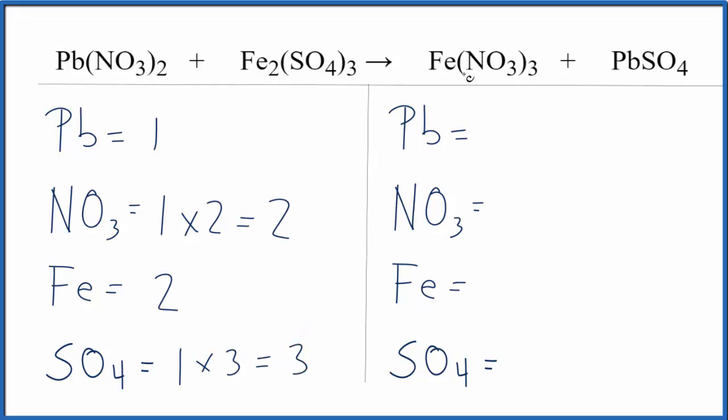On the product side, I have 1 lead, and I have 1 nitrate here times 3. I have 3 nitrates, 1 iron, and then just 1 sulfate.